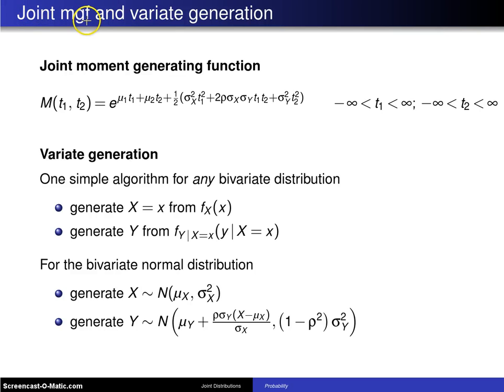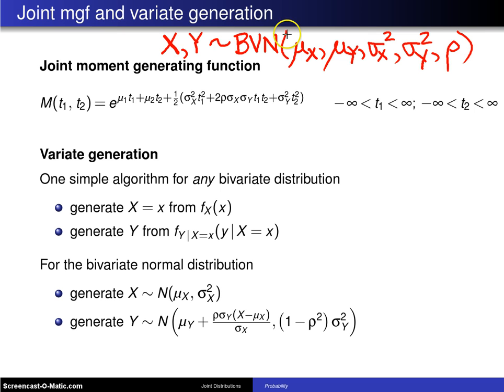This slide concerns the joint moment generating function and variate generation for the bivariate normal distribution. Assume you have X and Y which together follow the bivariate normal distribution with the usual five parameters: mean of X, mean of Y, variance of X, variance of Y, and correlation rho. The joint moment generating function is fairly tractable for the bivariate normal distribution.